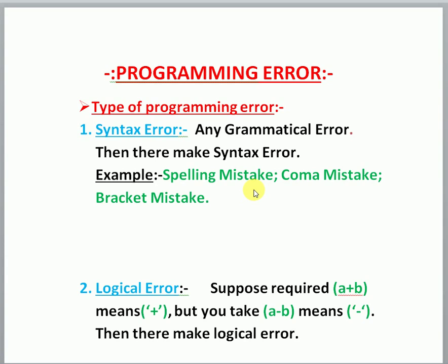What is a programming error? When we are writing or typing code, a program, we will do something wrong — either knowingly or unknowingly. This error is found when the compiler shows some error. This is called a programming error.